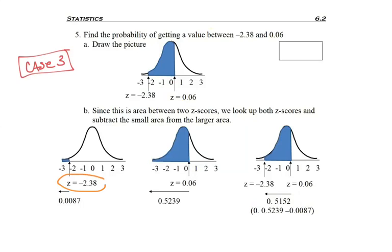So if you take the first case where I look up negative 2.38 on the edge of the table, I'm going to find 0.0087 in the middle of the table. But remember, that's area to the left. This is this little piece over here. Hopefully you'll notice that I don't actually want that area, but I needed to look it up.